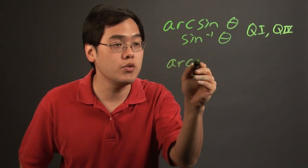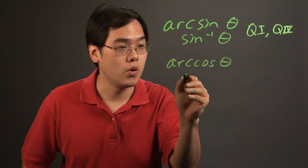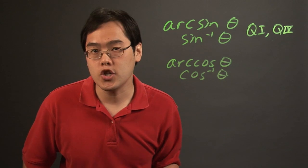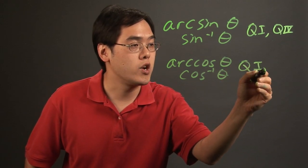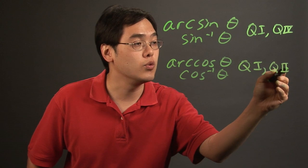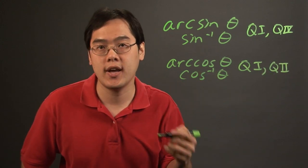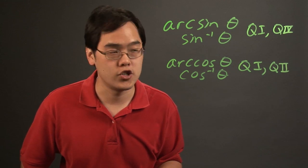Now the arc cosine function, or cosine inverse, which means the same thing, due to the definition of the arc cosine, is defined only on quadrants 1 and 2. So quadrants 3 and 4 are not part of the definition, they're not defined on the arc cosine function.